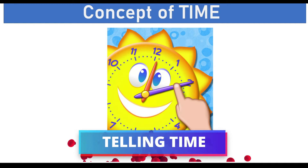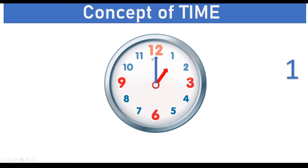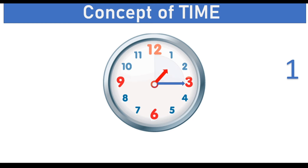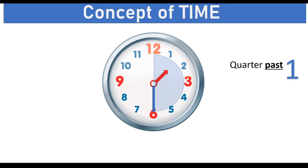The next thing we need to focus on is reading time. Whenever the minute hand points to 12, the time is equal to the number pointed by the hour hand. In this case, it's 1 o'clock. When the minute hand covers 1 quarter of the circle, we say the time is quarter past 1, because the hour hand has moved off 1 a bit. Then when the minute hand covers half of the circle of the clock,